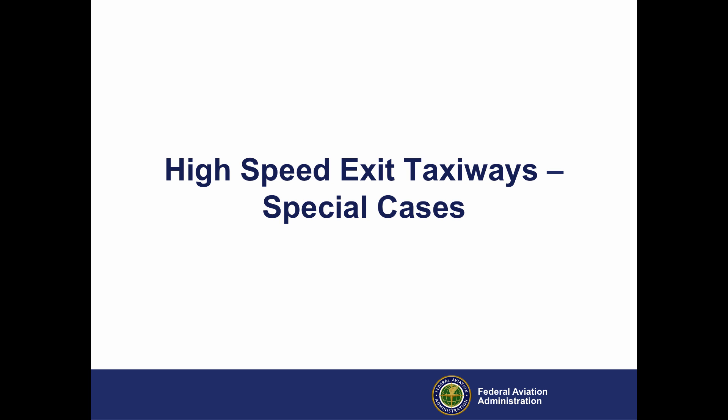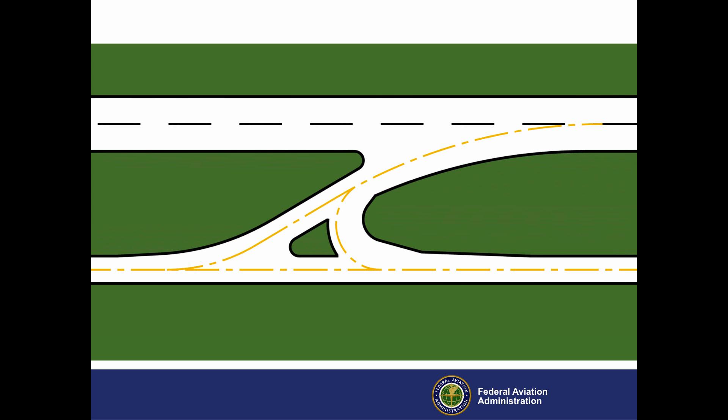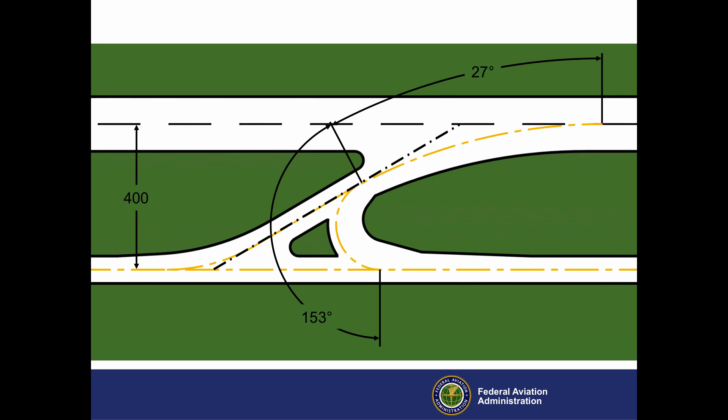Next, we'll discuss high-speed exit taxiways with special design requirements. Sometimes the existing runway centerline to taxiway centerline distance is too tight to accommodate the minimum radius requirements of the 150-degree reverse turn using a 1,500-foot radius turn of 30 degrees off the runway. In these cases, retain the 1,500-foot radius exit curve and the 30-degree exit angle, but start the reverse turn before the 30-degree turn is complete. In this example, the taxiways are designed for TDG-5 with the taxiway centerline only 400 feet from the runway centerline. To maintain a nose-gear steering angle of no more than 50 degrees, the reverse turn must start at a point where the airplane has turned through only 27 degrees of the 30-degree turn off the runway, resulting in a 153-degree reverse turn.